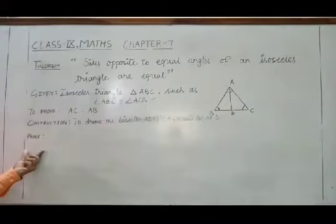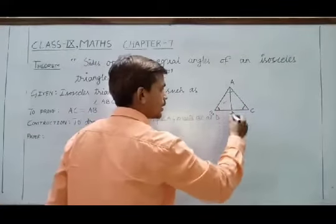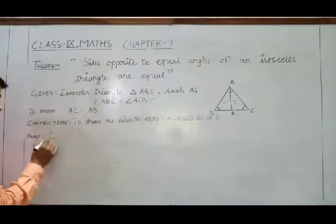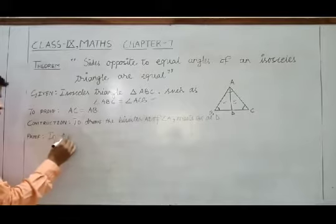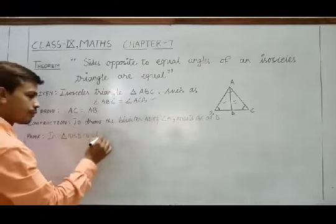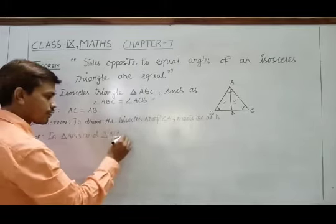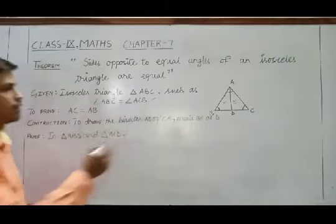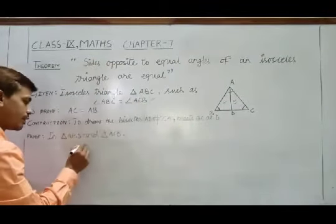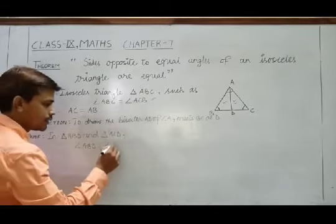Let's start with the proof. We observe two triangles: triangle ABD and triangle ACD. In triangle ABD and triangle ACD, the first condition is that angle ABD equals angle ACD.